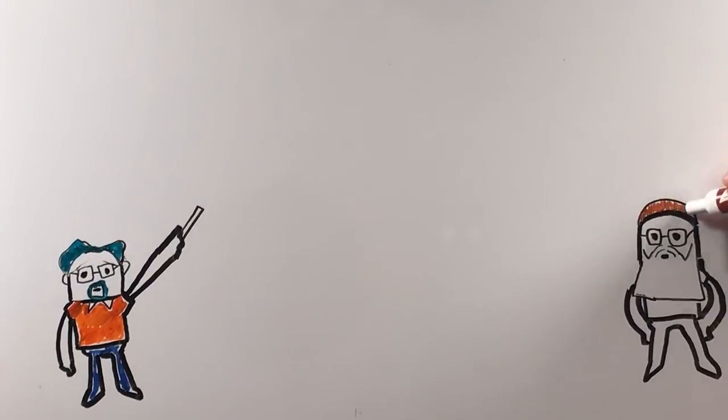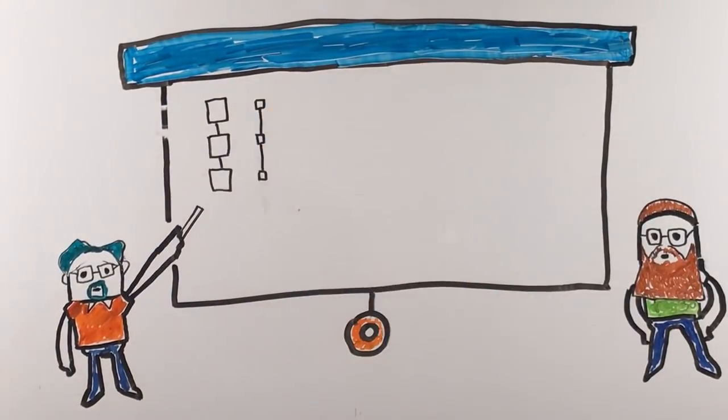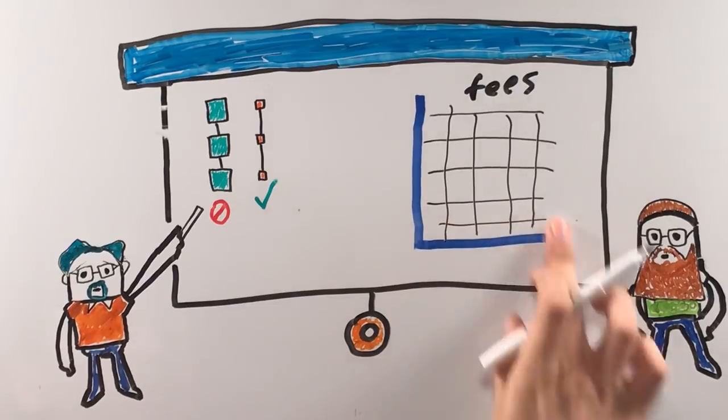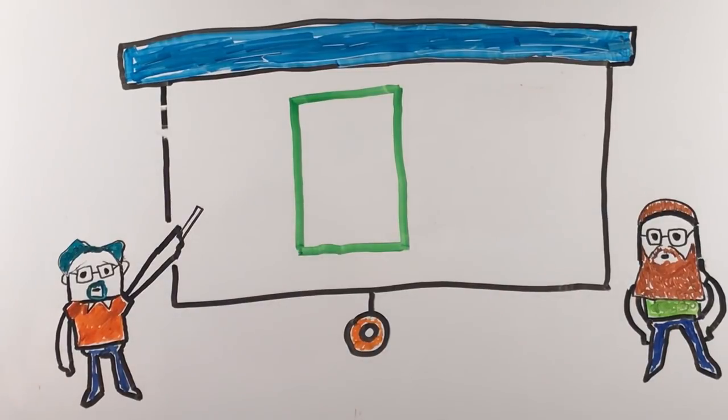Instant transactions were reliable until the Bitcoin core team decided to introduce a fee market. The block size would be kept small, and fees would rise to the upper limit users were willing to pay for the security. With rising transaction fees and full blocks, your transaction could get stuck for weeks in the mempool if you didn't pay a high enough fee.